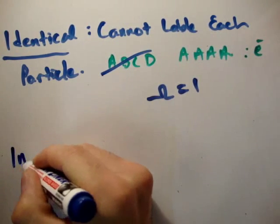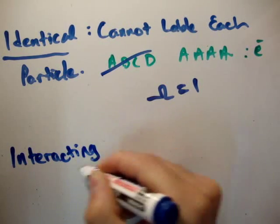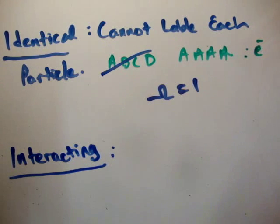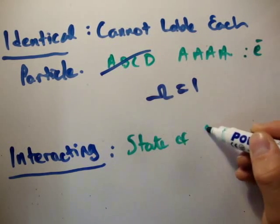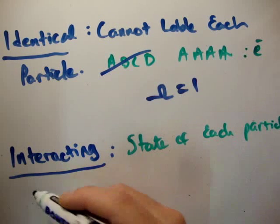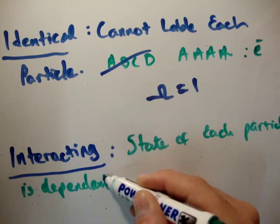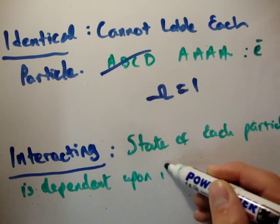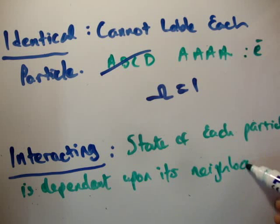And finally, we're going to talk about interacting particles. What is interacting? Well, it means that the states of particles depend on each other. The state of each particle is dependent upon its neighbors.